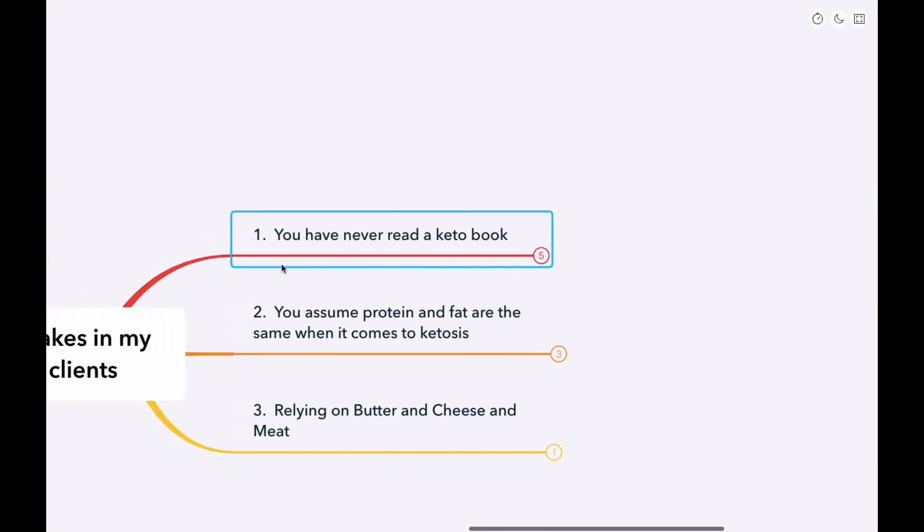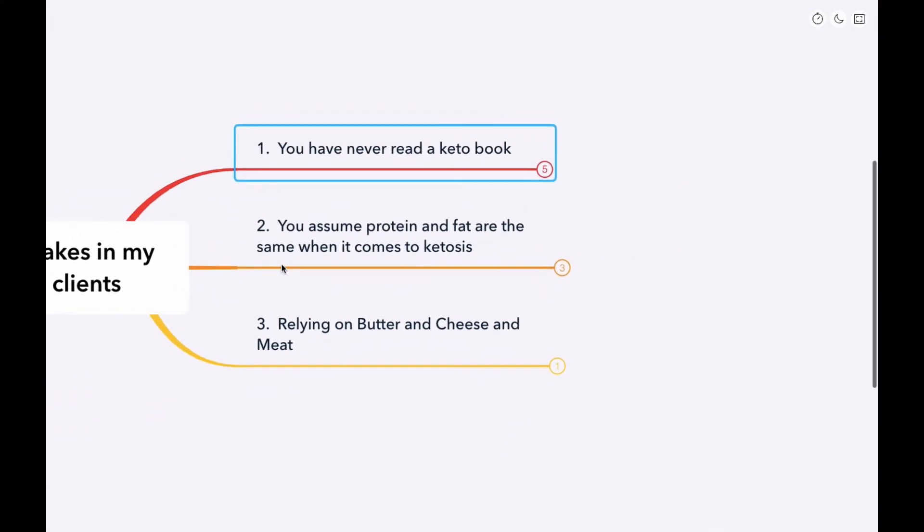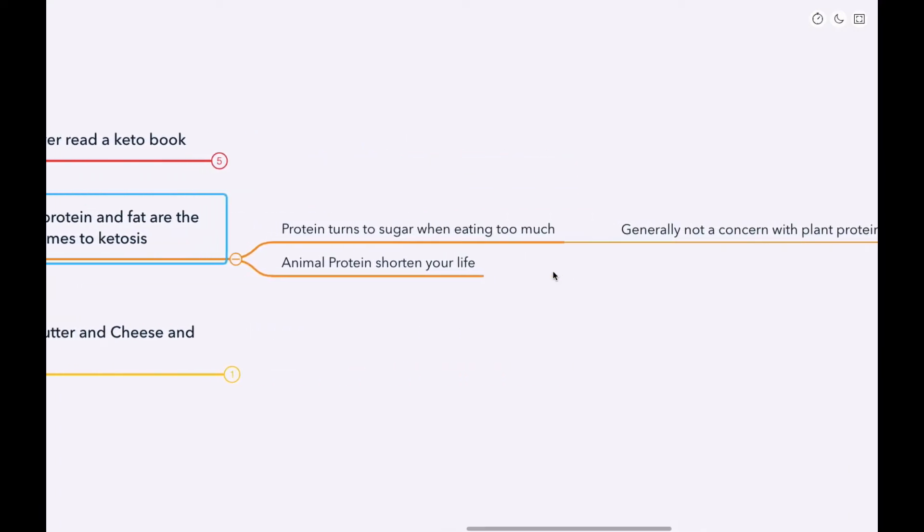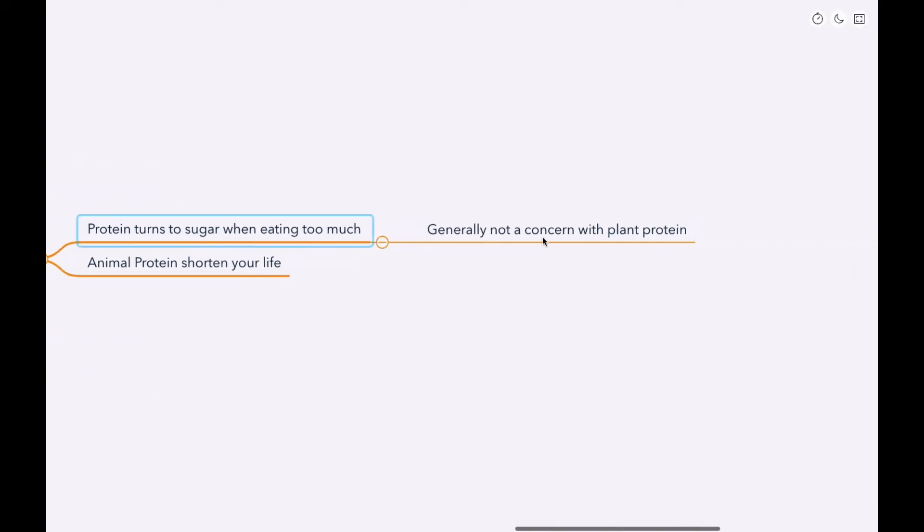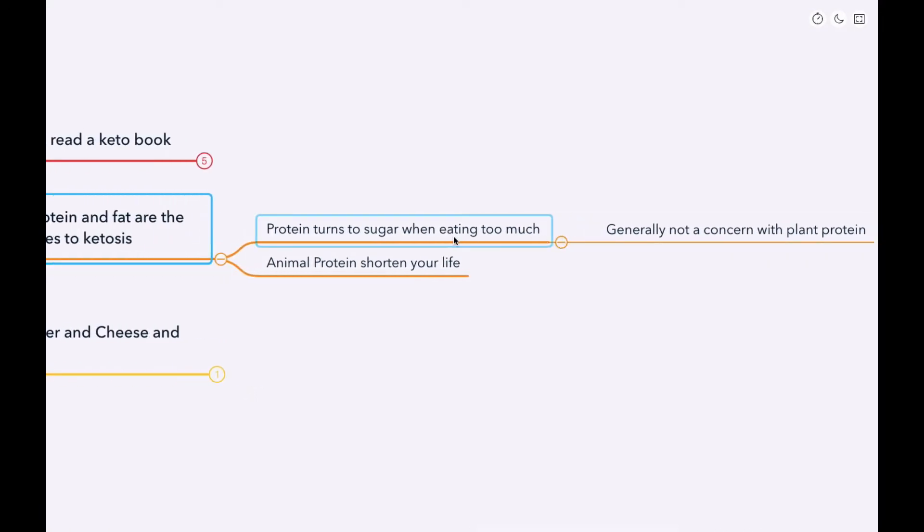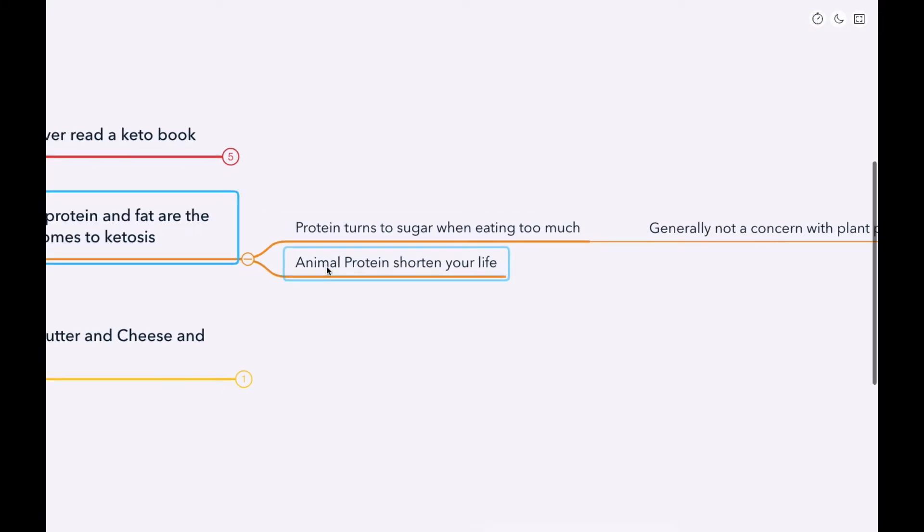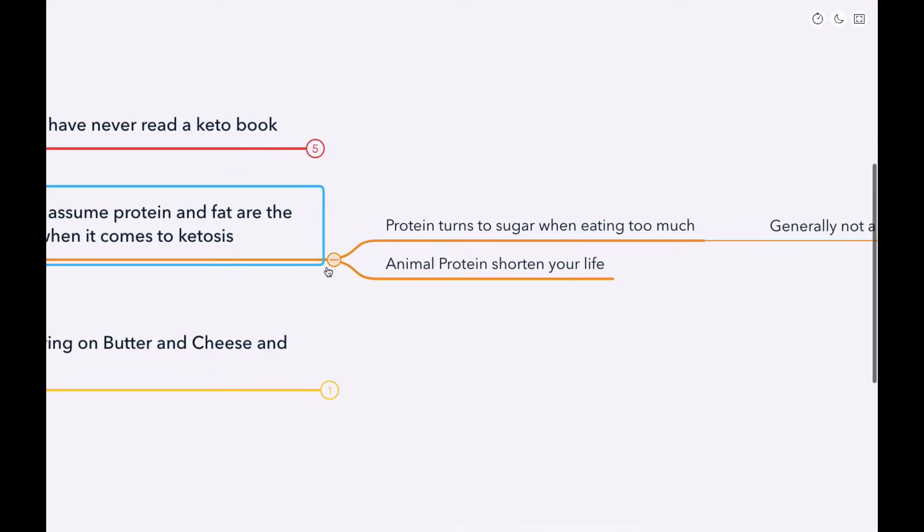The second mistake is that you assume that protein and fat are the same when it comes to ketosis. You have to understand that protein, first of all, in your diet, you're not really capable of storing all that much protein in your body. And when you don't need a huge amount of it, believe it or not. So when your body gets an excess amount of that, then it has nowhere to store it. So it basically gets converted into sugar, which is obviously going to affect ketogenic diet, as well as the fact that as each day progresses, each day goes by, we're seeing more and more evidence showing that animal protein essentially shortens your life.